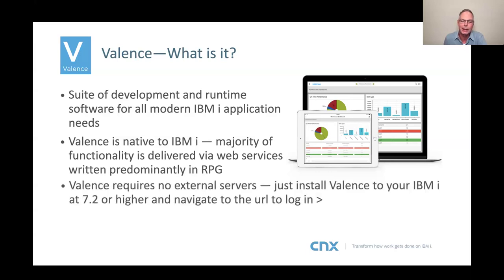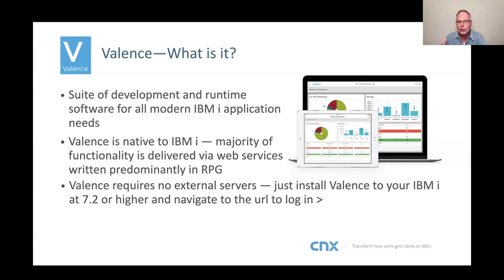I mention this because I've had many questions in past demos — people asking whether there must be some kind of Windows server external to the IBM i doing all this. The answer is no. There are no external servers required. Valence is super easy to install — you just install it to your IBM i, go to the URL to log in, and you'll see that in our demo. You do need IBM i version 7.2 or higher.